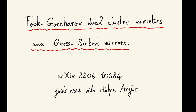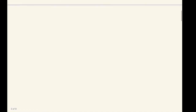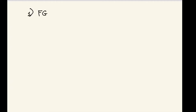This talk is about a comparison of two notions of dualities. The one which in the title is called the Fock-Goncharov dual cluster, and the one which is related to Gross-Siebert mirror symmetry. I will first talk about the Fock-Goncharov duality for cluster varieties.